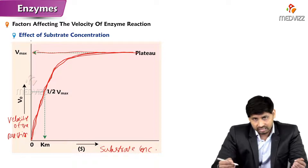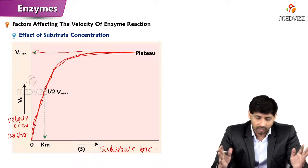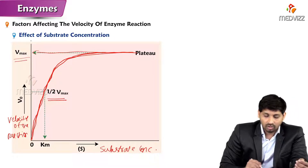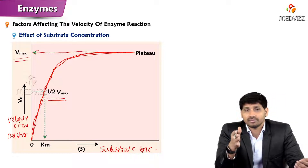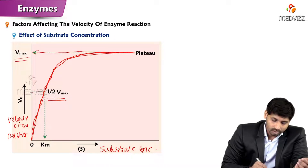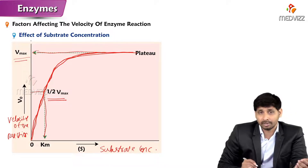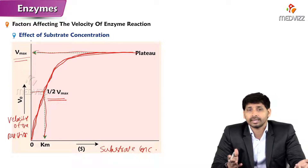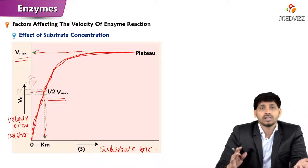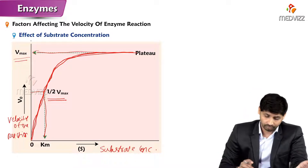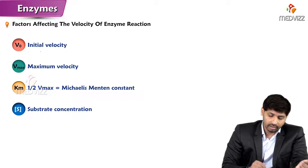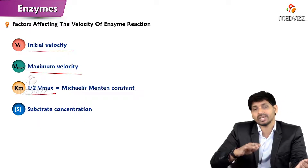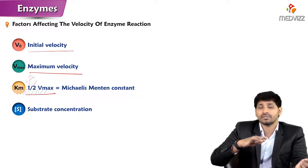So how much ever you increase the substrate concentration, the rate of reaction is not going to change, because the enzymes are saturated with substrates. Initially, with the increase of substrate concentration, the rate of reaction increases, but after some point the graph attains a plateau. There is a term called half Vmax — the point at which the velocity of reaction is half of the maximum is known as Km.